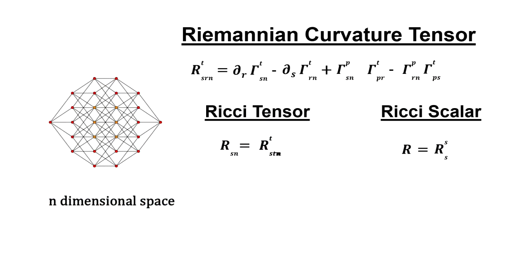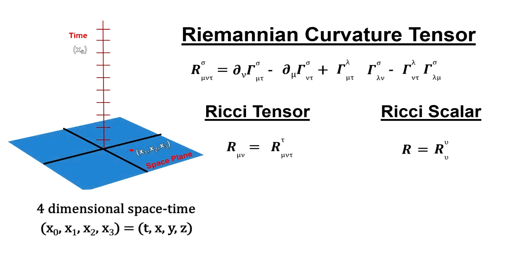With Riemannian geometry and the Ricci tensor, he had what he needed to develop the curvature side of the equation. First, we fix the generalized n-dimensional coordinates to our four spacetime coordinates.